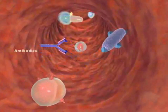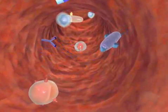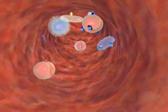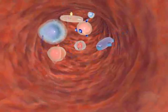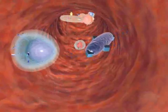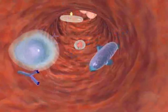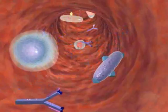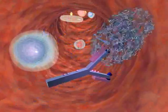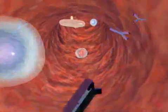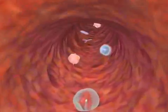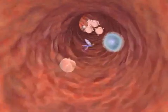B cells respond by transforming into antibody-secreting cells. Their antibody binds to the antigen causing its destruction. Some B cells remain in circulation carrying the memory of that antigen.